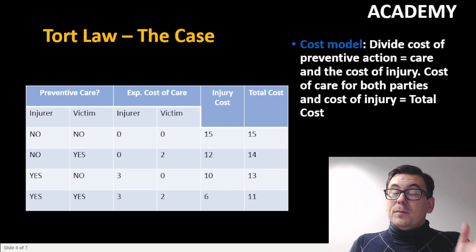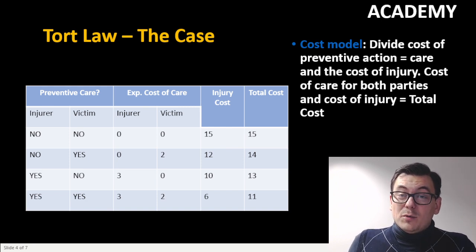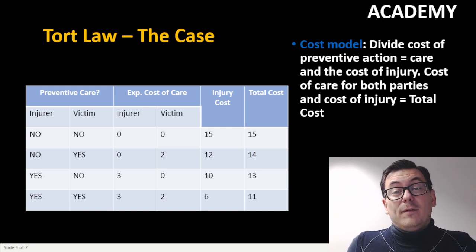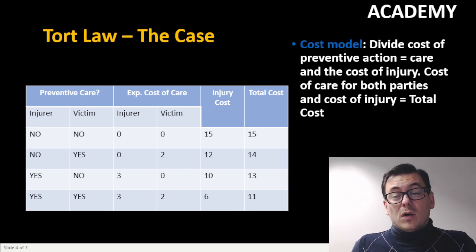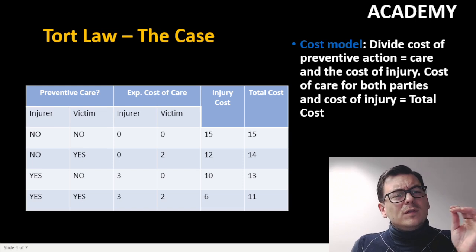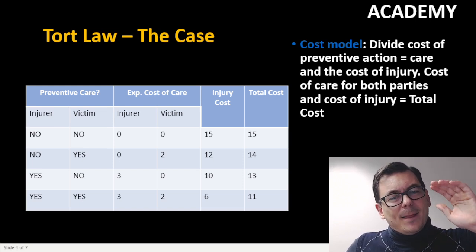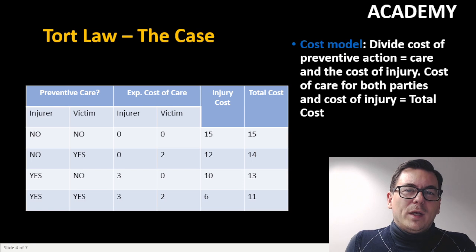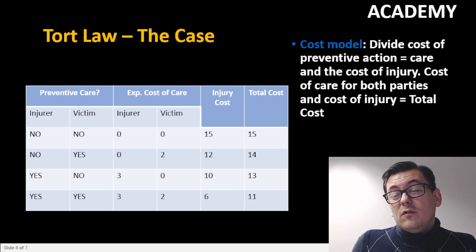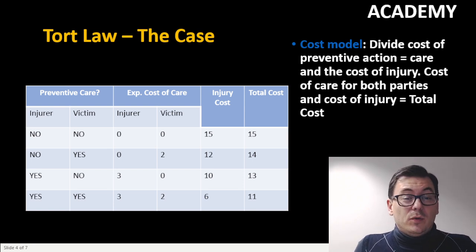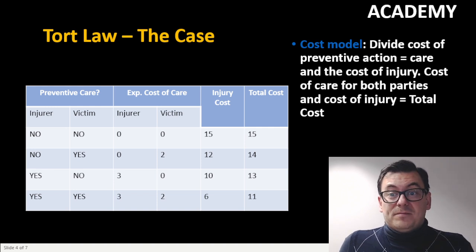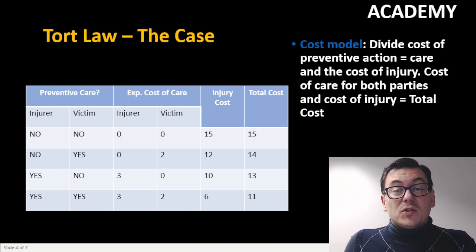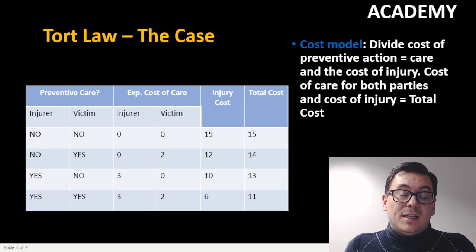If both are careful, we also have to remember they each bear a cost of being careful. So the injurer bears a cost of three, the victim two, the injury cost will be six, and the total cost will be 11. This is the lowest total cost we could get, and from a societal view this is what we want to strive for, because it maximizes total social wealth in this case.